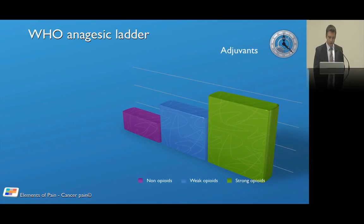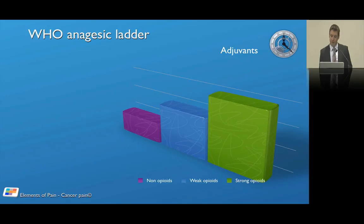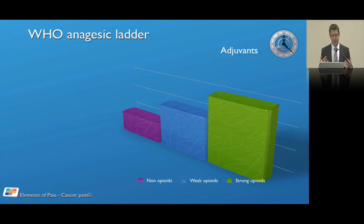The WHO analgesic ladder came about in the early 1980s. It was a simple step-wise approach to managing cancer pain: starting with non-opioids and simple analgesics, then moving to weak opioids — the big one being codeine — and then strong opioids, the common cheap worldwide one being morphine. Medication needs to be given by the clock, and adjuvants can be used to control fear and anxiety. A retrospective validation study showed a large proportion of patients on opioids had significant pain reduction, so it seemed to work.